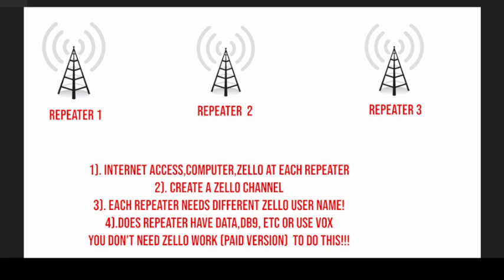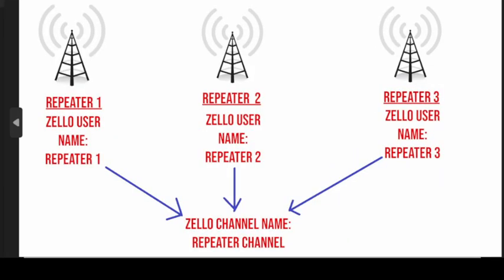Now I want to show you a little chart here to kind of help put this in view. I'm using three repeaters as an example — you can use five, ten, fifteen, however many you want, and you can connect worldwide because it's using the internet. Repeater one has a Zello user called Repeater One, repeater two has Repeater Two, and repeater three has Repeater Three. They're all going to join a Zello channel called Repeater Channel. So it's three different usernames joining one Zello channel.